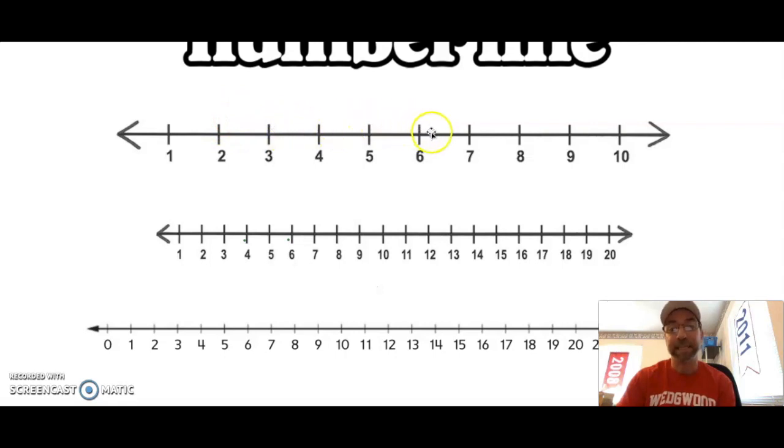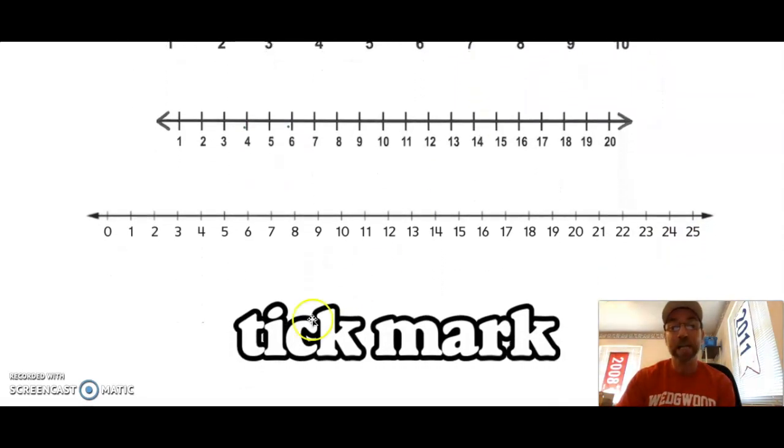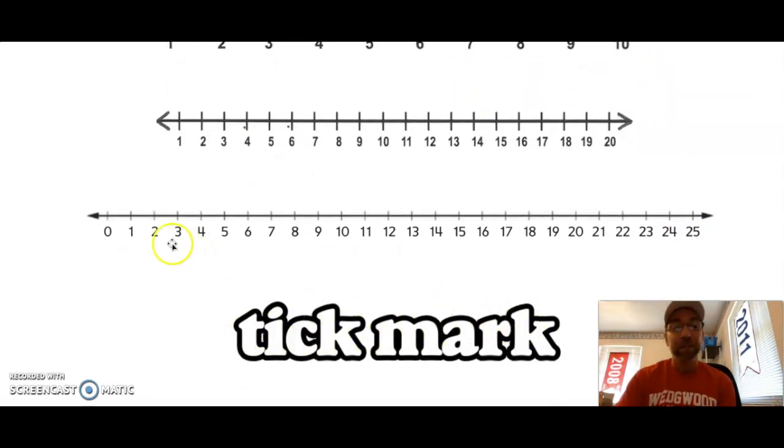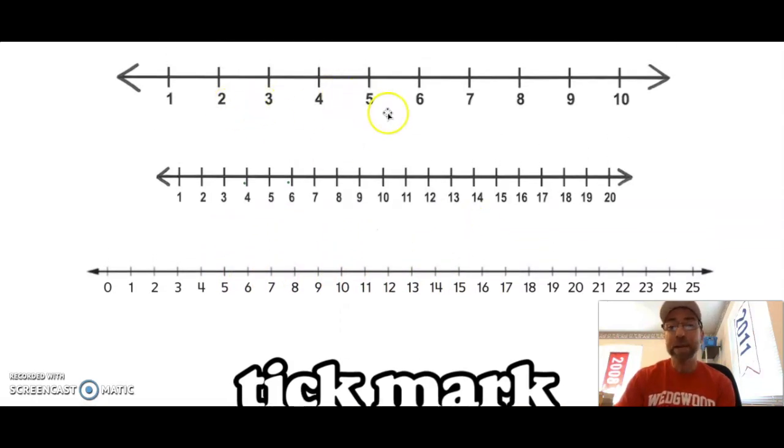On number lines we have something called a tick mark, so all of these little tick marks represent where our numbers go. You can see that we have three different number lines. Our first number line starts at one and ends at ten, the second number line starts at one but ends at 20.